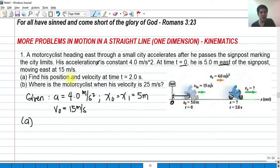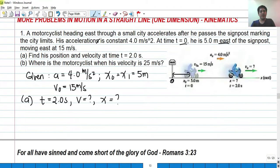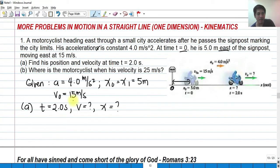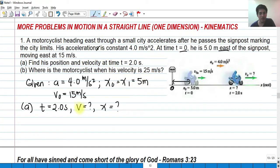Letter A: find the position and velocity at time equals two seconds. We have the given time, initial velocity, acceleration, and initial position. Since acceleration is constant — meaning it is not changing — we can use the three basic kinematic equations. We'll use delta x equals v-naught t plus one-half a t squared to find the position at time equals two seconds.